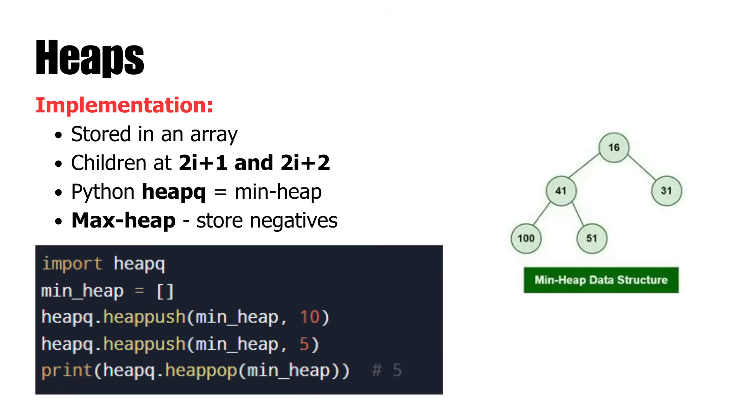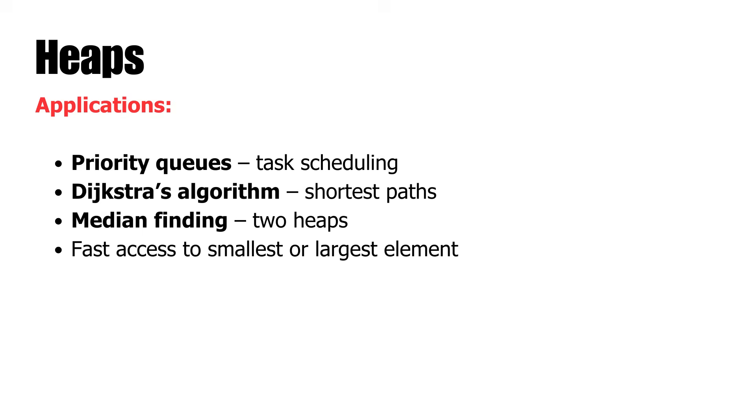Heaps are usually represented as arrays rather than node-based trees. For example, Python's heap queue module employs list-based storage for a min heap by default. In order to mimic a max heap, negative values can be added. Heaps are used in priority queues, Dijkstra's algorithm for finding shortest paths, and median-finding algorithms. Heaps are highly efficient in retrieval of the highest or lowest priority item very rapidly and are therefore of interest in real-time and resource scheduling contexts.